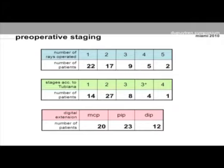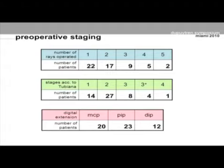Stages according to Tubiana: about one-third had a rather simple early stage, two-thirds were stage two, and one-fourth were stages three and four. Regarding digital extension: 20 patients up to the MCP joint, 23 patients to the PIP joint, and 12 patients to the DIP joint.